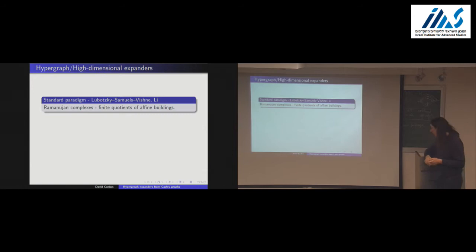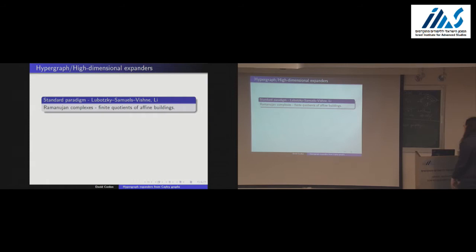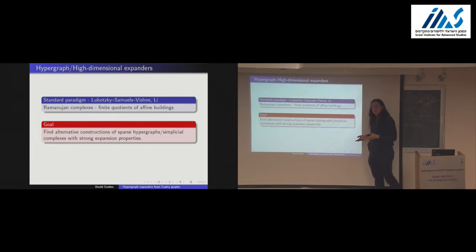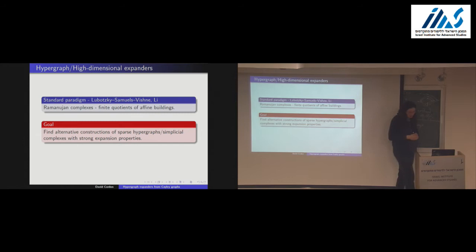Guaranteeing both conditions simultaneously — that every pair is in lots of triples and that you can randomly walk around — seems quite hard. The standard way of finding a bounded-degree object satisfying these conditions is to use Ramanujan complexes due to Lubotsky, Samuels, Vigene, and Tully. These are finite quotients of affine buildings. What I'd like to do is talk about how one can come up with alternative constructions of these things, in particular fairly sparse hypergraphs with strong expansion properties that are also randomizable.